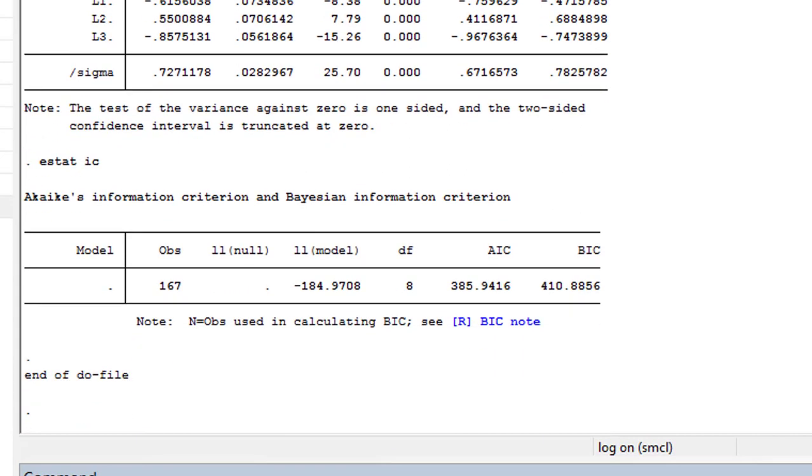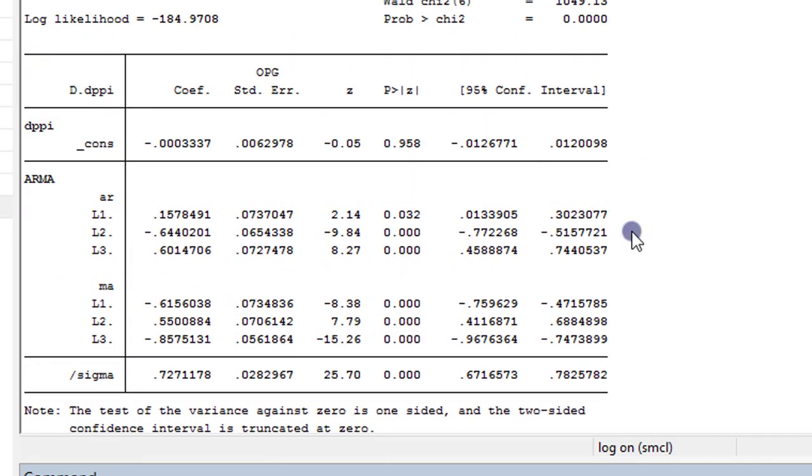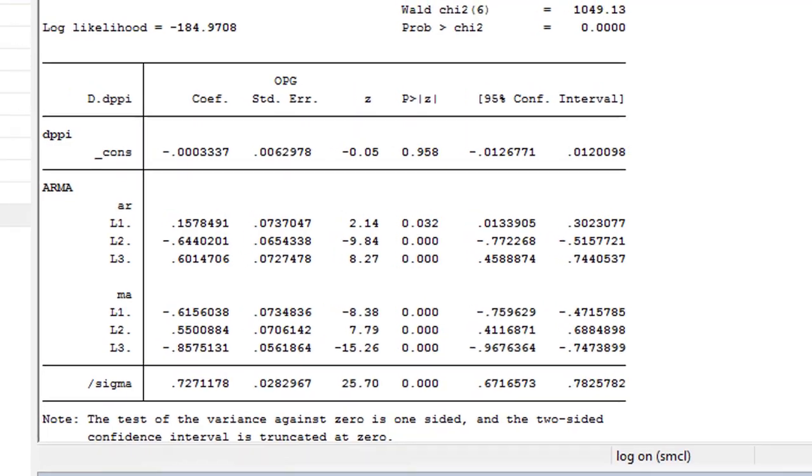And below that, we have the AIC and the BIC statistics. They are also the lowest among the six models that we estimated. So this is the ARIMA 3,1,3 model that we are going to perform some diagnostics on before we use it to forecast the PPI series.